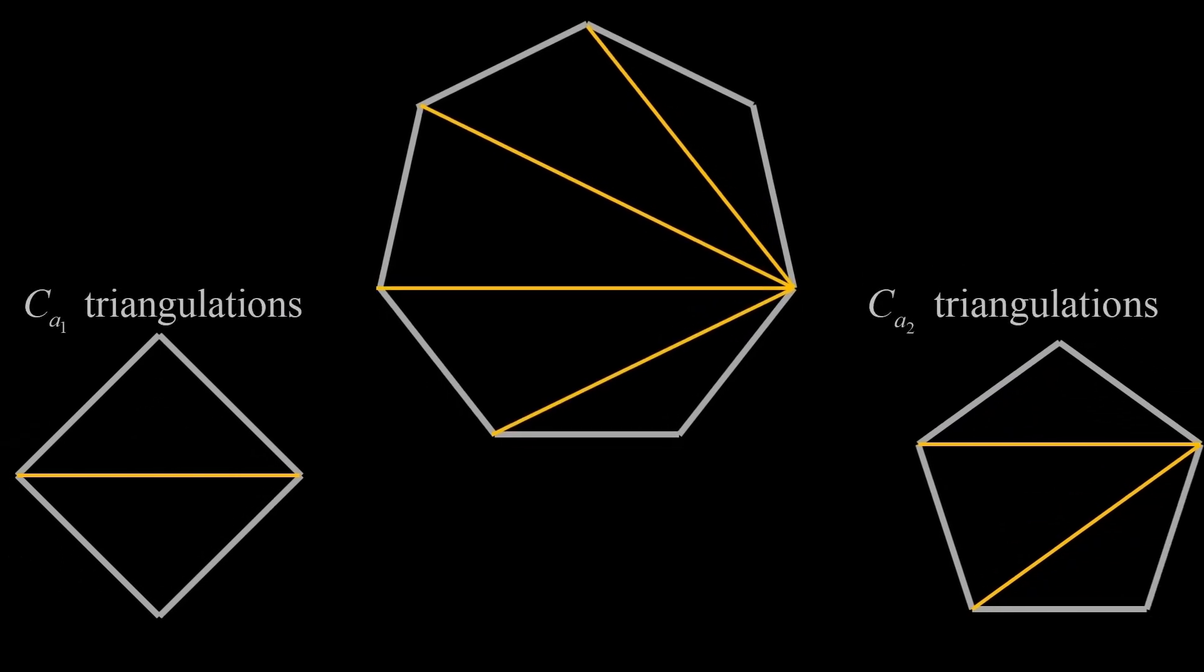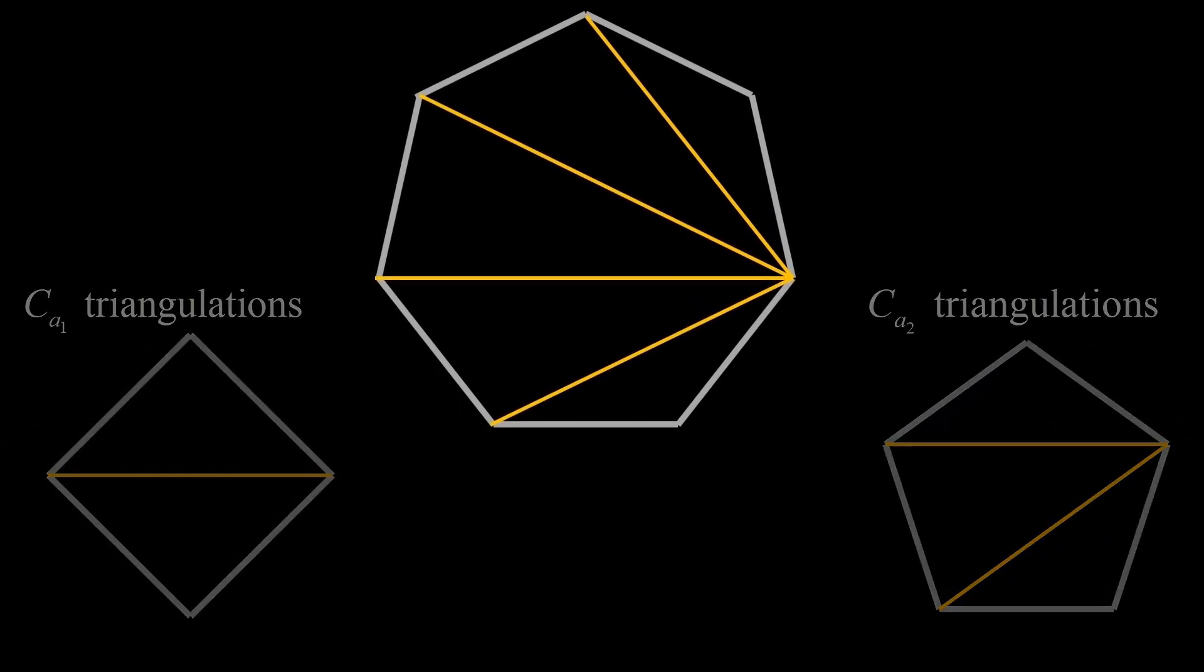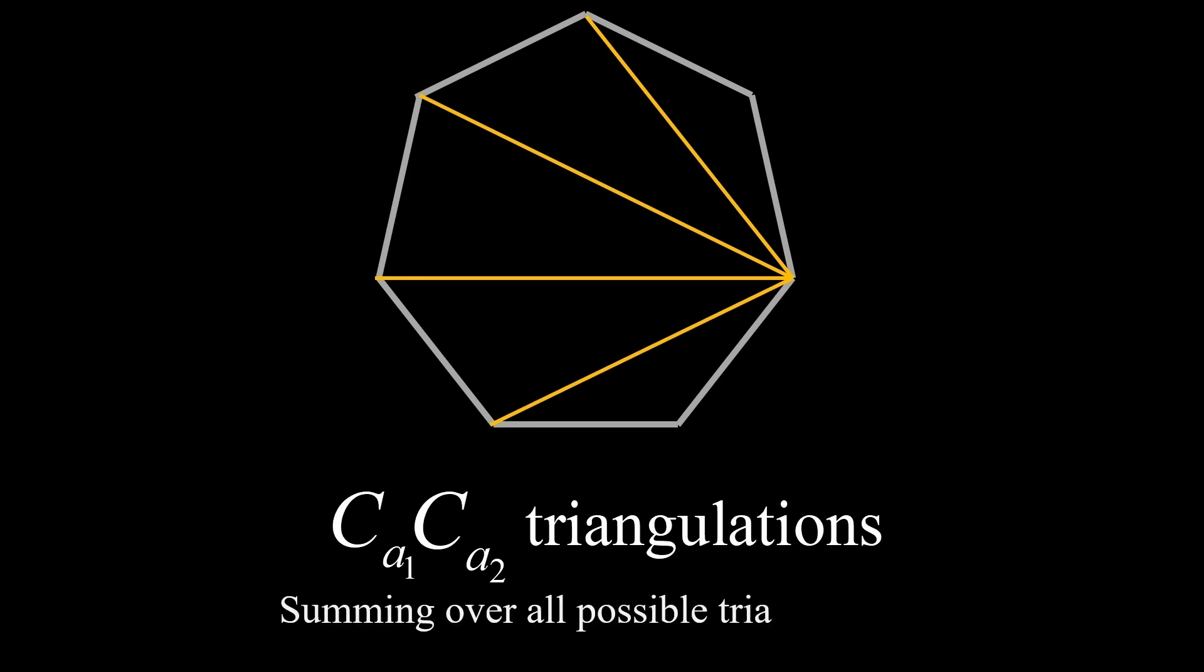Now, since there are C sub ai triangulations of qi, we can obtain their recurrence and initial condition by summing over all possible values of ai.